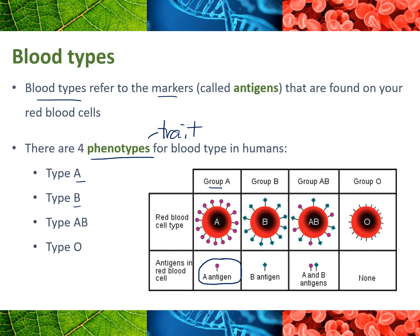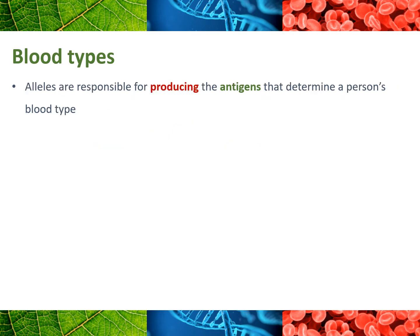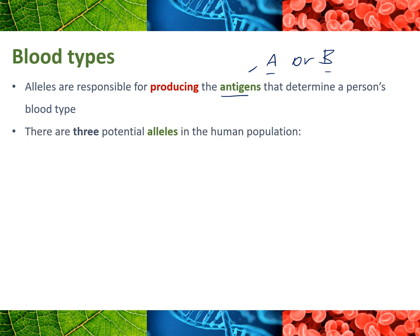You can have type AB, where those red blood cells have both A and B antigens on them. Or you can have type O, which means that the red blood cells have no antigens on them. So there are four different phenotypes, but there are more alleles than there are phenotypes. Alleles provide the genetic code to produce those antigens — the antigens are either A or B. Someone could just have A, they could just have B, they could have A and B, or they could have none. So there are three potential alleles for blood type in the human population, and a person will only get two of those possible three alleles.